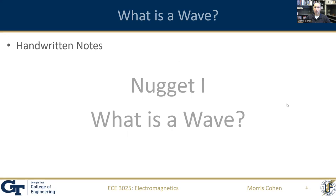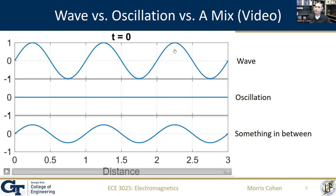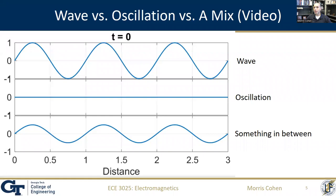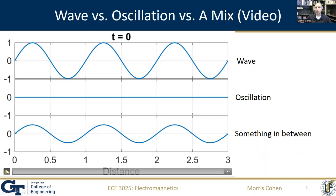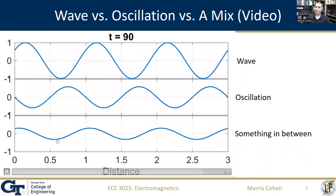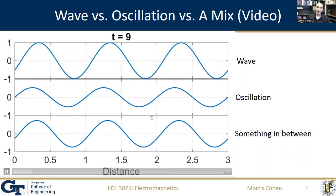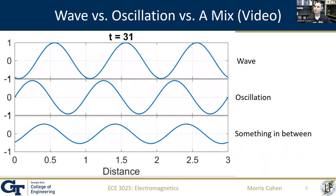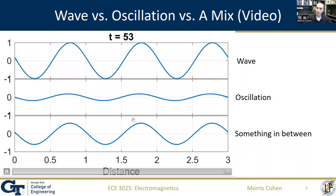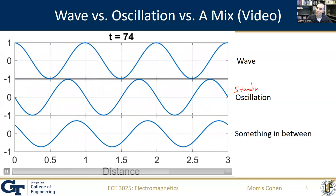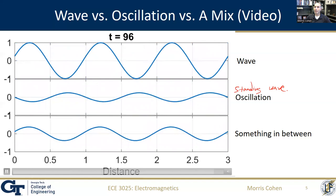Let me show you a video. The top panel is going to be a wave that's moving and carrying information. The second will be just an oscillation that is bouncing back and forth but not actually carrying any information. The third will be something in between. Clearly you can see the difference: the wave is moving and carrying information, the oscillation is not — it's bouncing up and down. But you can also have something that's a little bit up and down while also moving. This middle wave we're going to call a standing wave — it's a wave that's just not moving, not carrying anything in total.